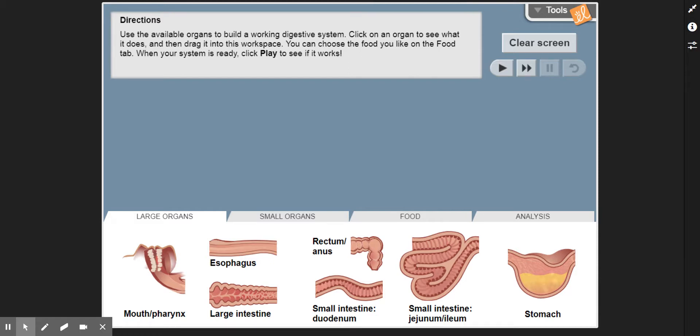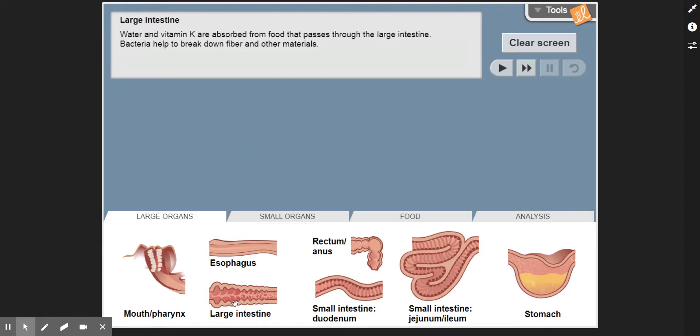So initially what we start off with, as we went through in class, we have down here the different organs: the mouth, pharynx, esophagus, large intestine, small intestine, duodenum, rectum, anus, small intestine jejunum, ileum, and finally the stomach. A little bit more in-depth, this section here—the jejunum and the ileum—this is what makes up the majority of the length of the digestive system. This is up to six meters in full-grown adults, which is over 18 feet, actually getting very close to 20 feet overall in length.